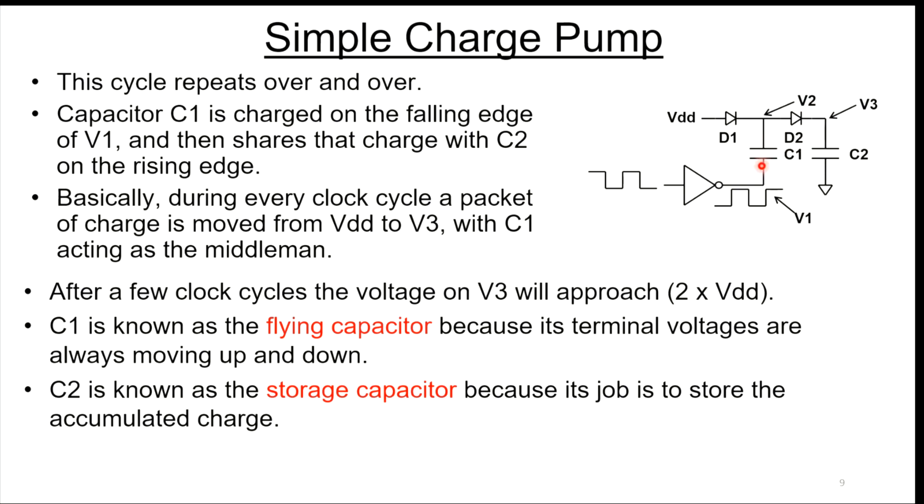C1 is just acting like the middle man. After a few clock cycles, V3 is going to approach twice VDD. Capacitor C1 is known as the flying cap because its terminals are always moving up and down. Capacitor C2 is known as the storage cap because it's holding the charge and accumulating this charge that you're pumping in on every clock cycle.